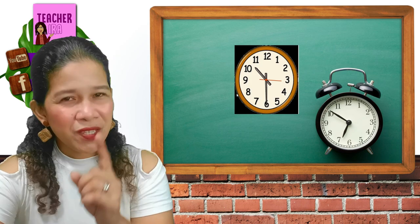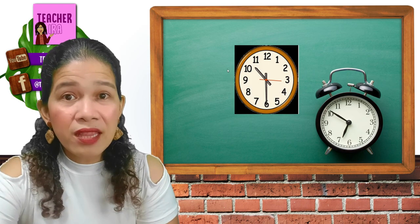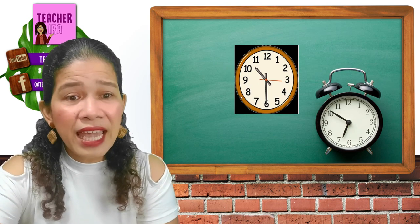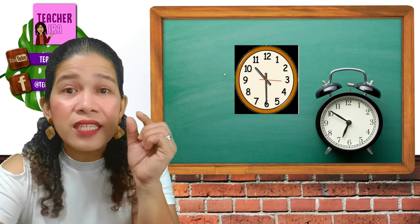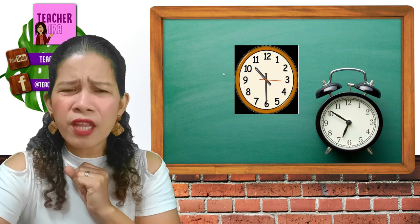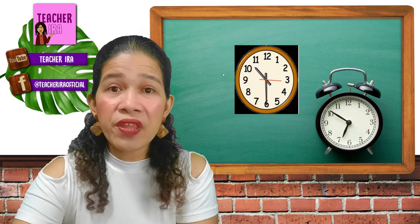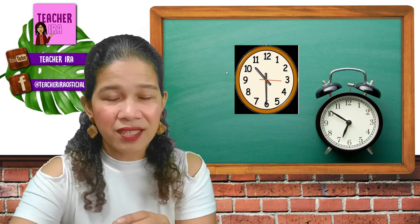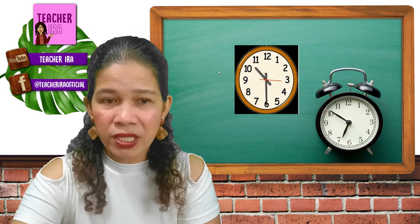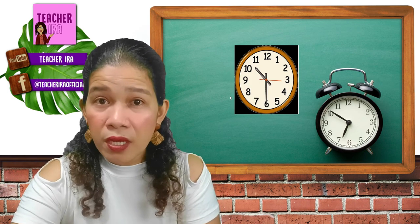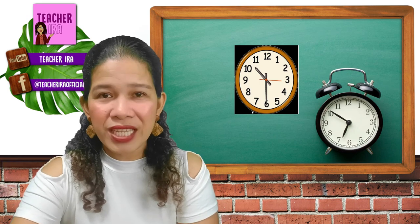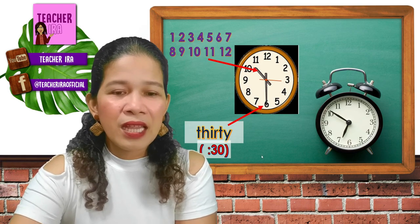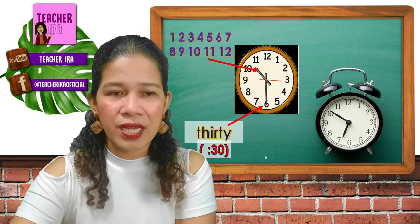Now let us go to another kind of time. What if your long hand is at number 6? The same as before, you are going to read the number where the short hand is pointed first. But when the long hand is at number 6, the short hand is now in the middle of two numbers. In this case, you read the number before — don't read the number the short hand hasn't reached yet. So you read 10, not 11, and when the long hand is at number 6 you always say 30.